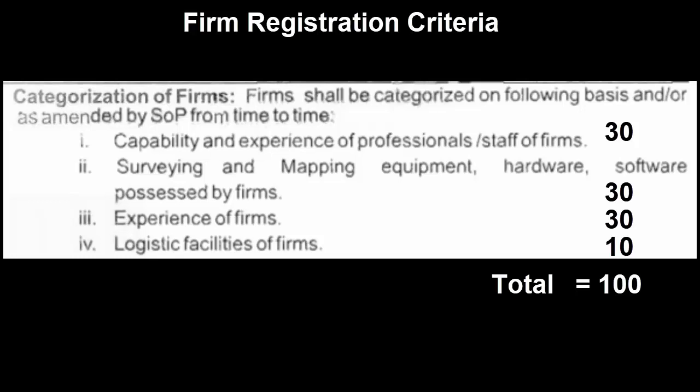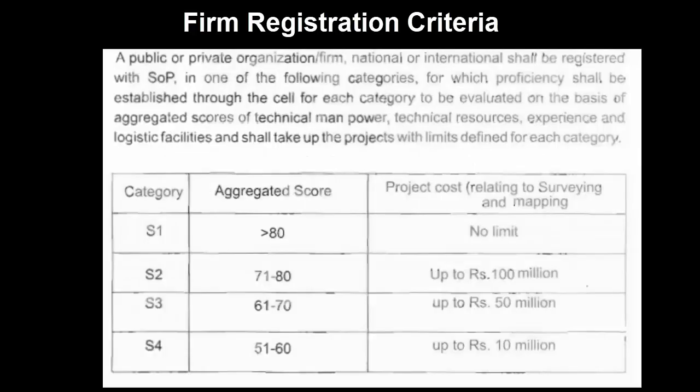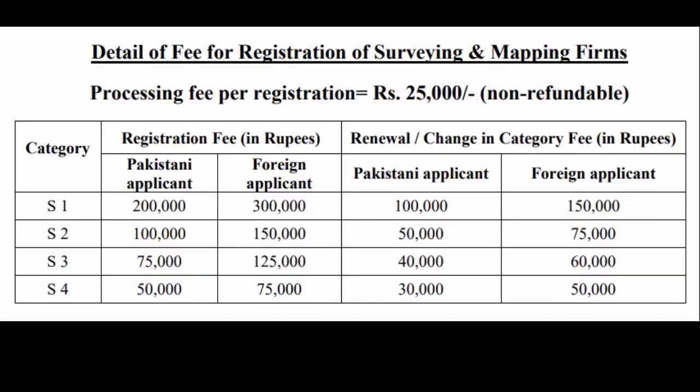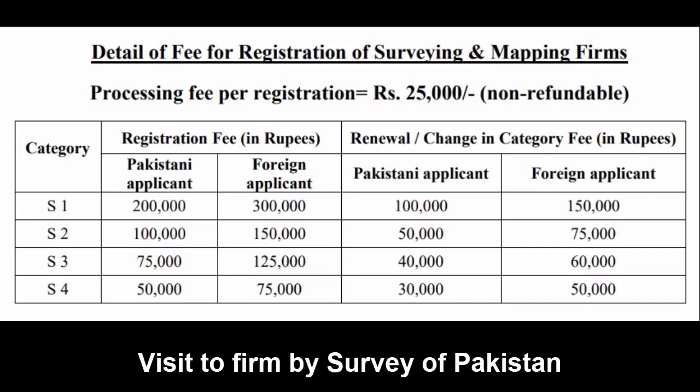In a total of 100 marks criteria, a firm securing more than 80 marks will be assigned the S1 category with no limit on project cost, and so on. The processing fee for firms is Rs. 25,000. Once a firm applies to Survey of Pakistan on the prescribed form with required documents, Survey of Pakistan arranges a visit to the firm's premises to physically verify the given details. Upon successful evaluation and determining the firm category, a registration fee is paid by the firm.